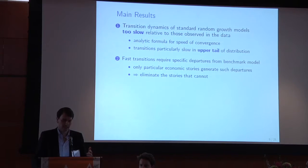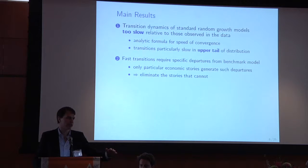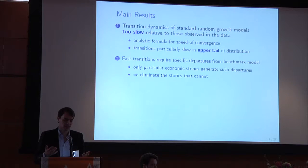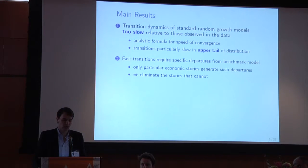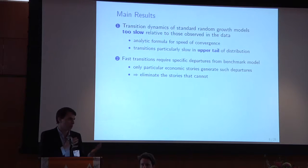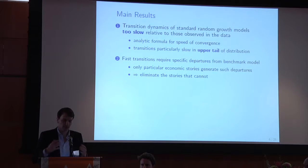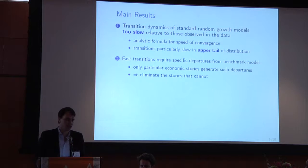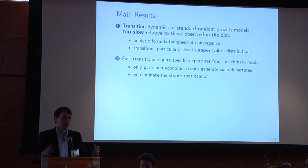On top of that, the transition turns out to be even slower in the part of the distribution we really care about — the upper tail. Given this result, we ask what can deliver fast transitions from a theoretical point of view. I'm going to argue that to get fast transitions, it requires quite specific departures from the standard models people typically talk about. Only very particular economic stories can generate these departures from standard random growth models, and we're able to use this result to rule out a bunch of economic stories.